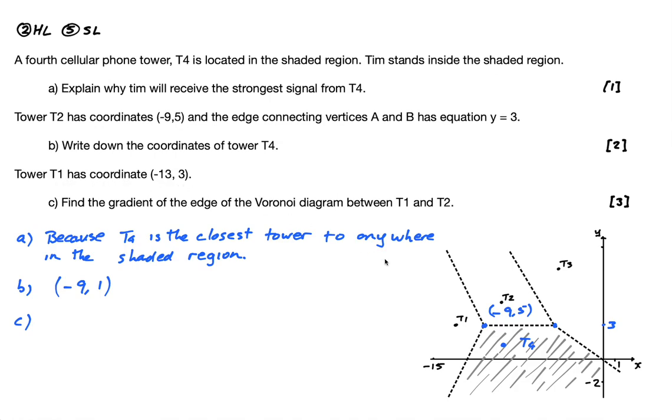Then finally, tower T1 has coordinate negative 13, 3. Find the gradient of the edge of the Voronoi diagram between T1 and T2, right? So what they're looking for here, guys, is the gradient of this line here.